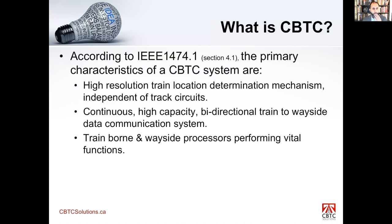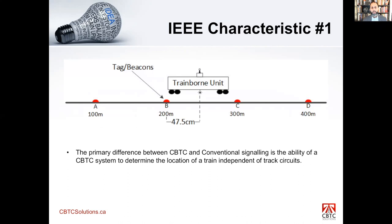So what is CBTC? According to IEEE 1474.1, the primary characteristics are: first, a high-resolution train location determination mechanism independent of track surface — no track circuits, no axle counters, the train determines its own position. Second, a continuous high-capacity bi-directional train-to-wayside data communication system where the train communicates its position to the wayside. Third, train-borne and wayside processes performing vital functions, meaning whatever you do must be safe. That is the most basic definition of CBTC.